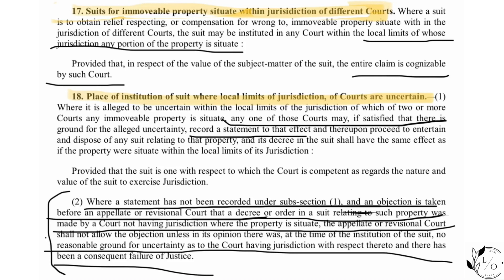Section 18 deals with the place of institution of suit where the local limits of jurisdiction of courts are uncertain — meaning unsure or doubtful. Section 18 simply says if jurisdiction is doubtful between two courts and it's unclear which court has jurisdiction, you can file the case in any of those courts. The ground of uncertainty is recorded as a statement. The proviso says if an objection of uncertainty is raised in appellate or revisional court but the statement was not recorded earlier, that objection will not be entertained.